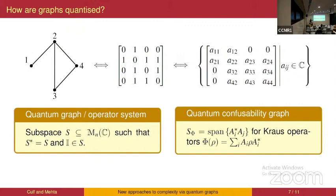This is the right object to generalize to a quantum notion of a graph because all classical graphs are contained as operator systems, but there are more operator systems than those constructed this way, giving natively quantum graphs. The justification for why this is the right notion is that the confusability graph ideas can be directly generalized to quantum channels: it's just the span of the products of the Kraus operators, giving an operator system. This operator system has connections to the zero-error capacity of the corresponding channel.